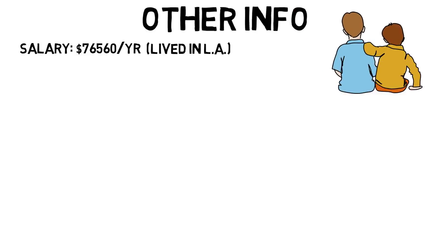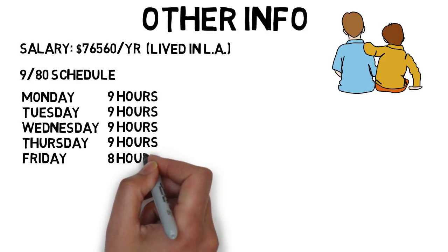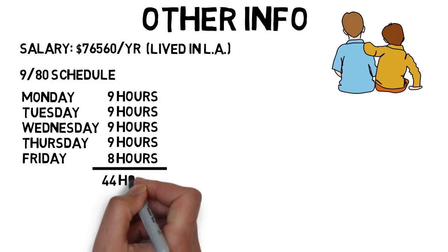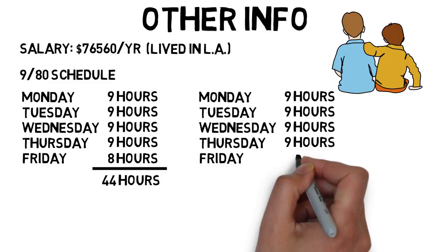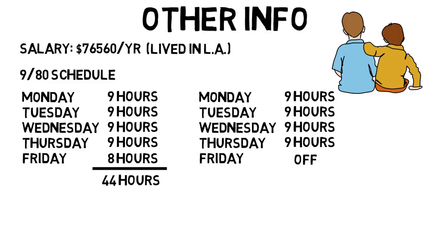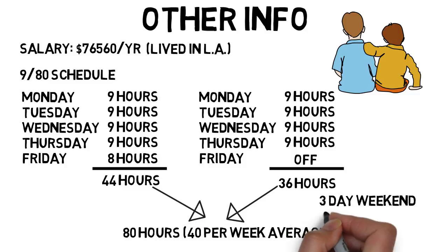The job was on a 9/80 schedule, which in my opinion was really nice. This is where for one week, you work Monday through Thursday for 9 hours each day instead of 8. Then on Friday, you work 8 hours, so you have a 44-hour week. But the next week, you work Monday through Thursday for 9 hours each day, and then you get Friday off, and this pattern repeats. That's 36 hours, which adds up to 80 hours in 2 weeks, or 40 hours per week on average, a normal full-time job. But this way, you get a 3-day weekend every other week. Not every company does this, but I thought it was really nice.